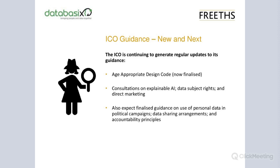I want to quickly pick up on the age-appropriate design code. It's now been finalised — consulted on last year and now published. It has two big implications. The obvious one: anyone who operates a site where children are part of their target audience needs to think about making sure their privacy notice and everything related to online privacy protection is configured to be usable by children. That means thinking about the language you use in notices — making them much less legalistic and much more understandable.